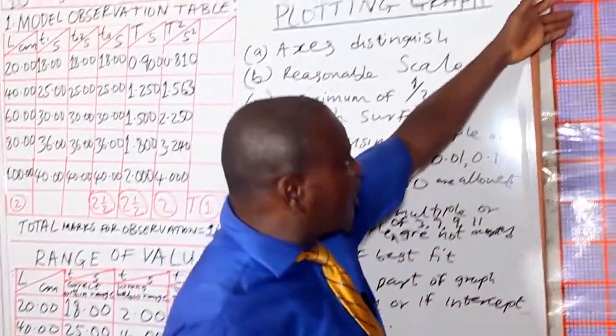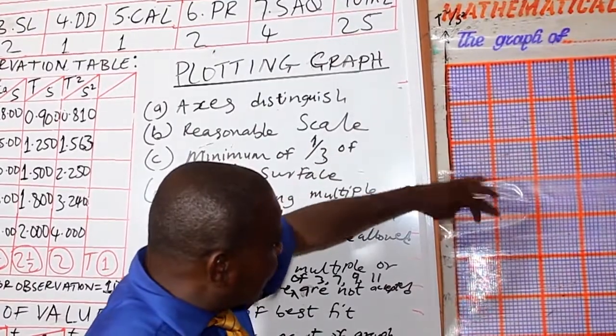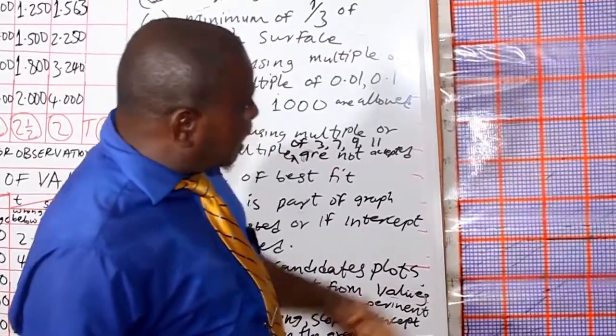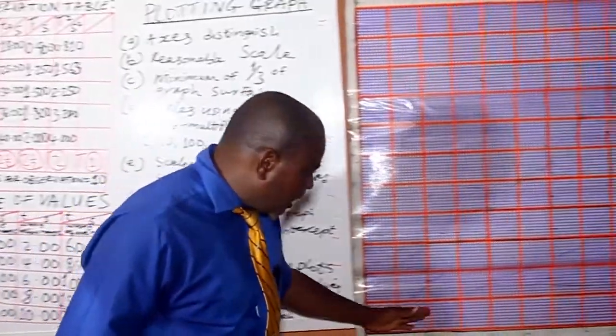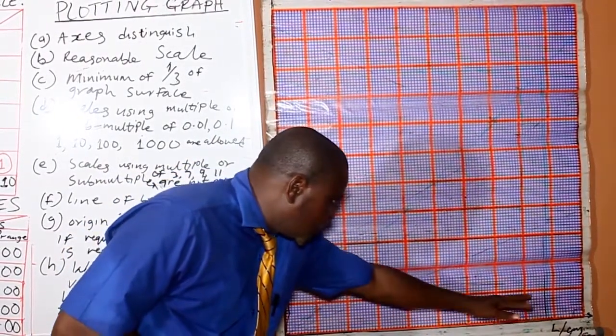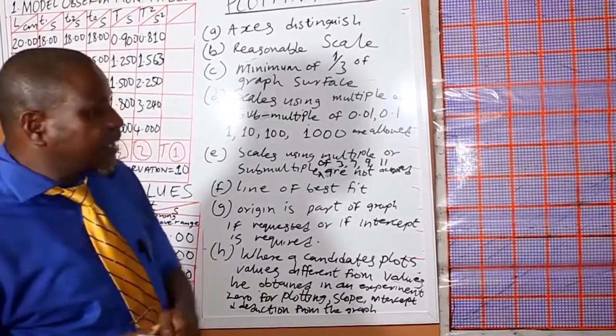Well, if you look at this big square, you have 1, 2, 3, 4, 5, 6, 7, 8, 9, 10, 11. There are 11 big squares on the vertical scale. And there are 1, 2, 3, 4, 5, 6, 7, 8, 9, 10. 10 big squares on the horizontal scale.